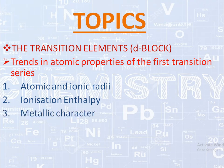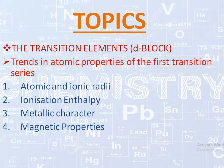Next was metallic character — all the transition metals show metallic properties. Next was magnetic properties, in which we learned that nearly all the transition metals, their ions and compounds are paramagnetic, that is they are attracted by a magnetic field.